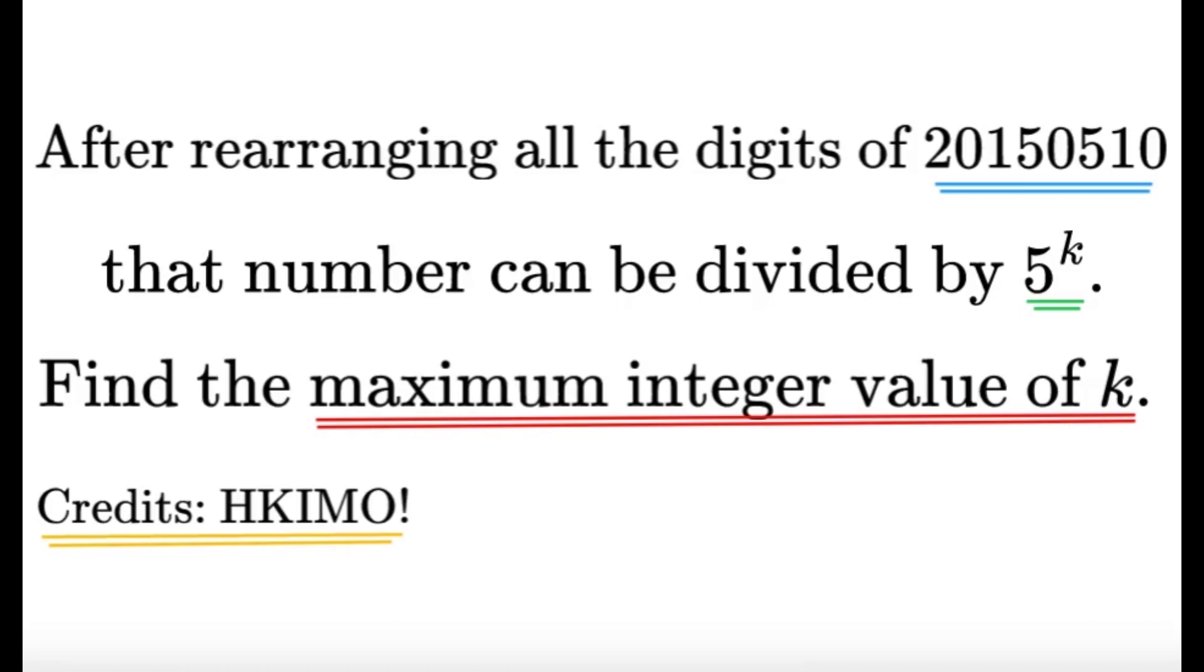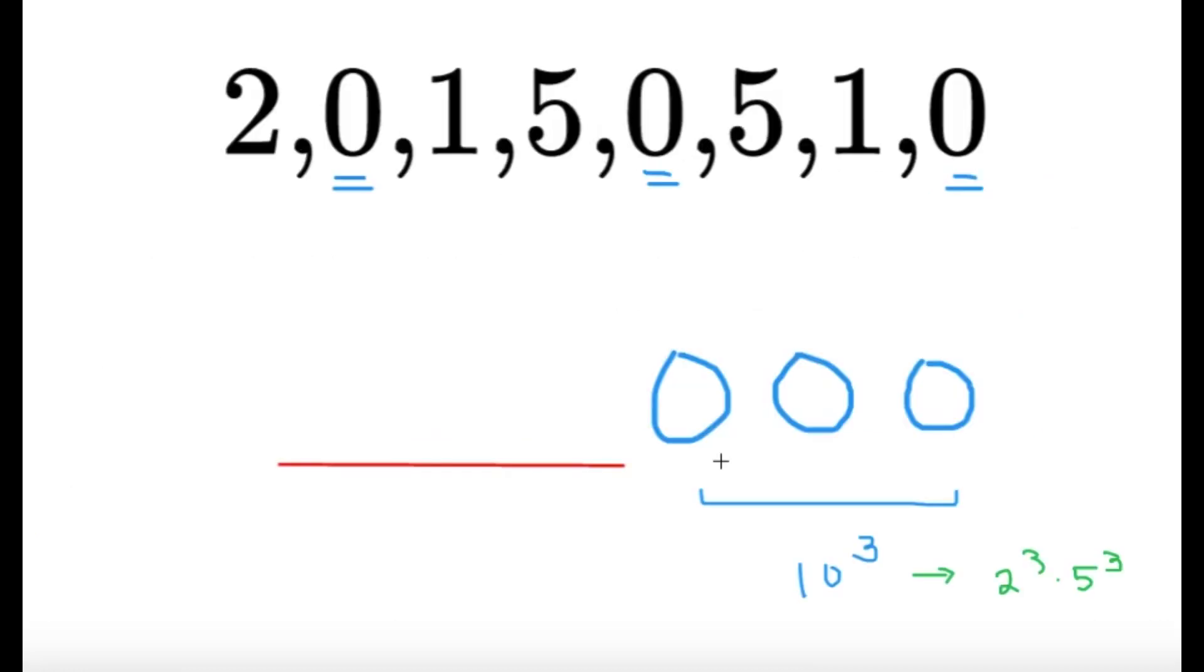Let's take a look at the digits of the number given. We have 8 digits: 2, 0, 1, 5, 0, 5, 1, and 0.